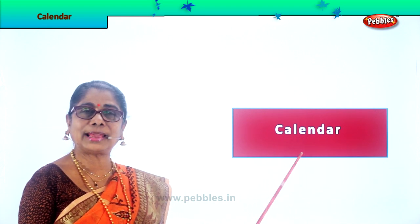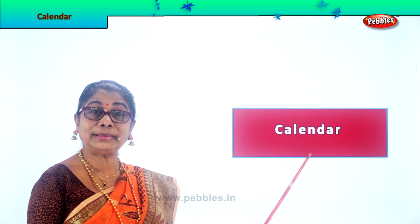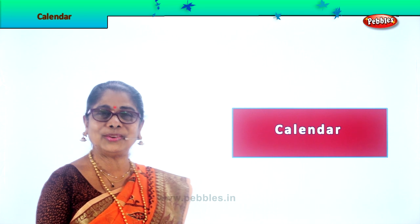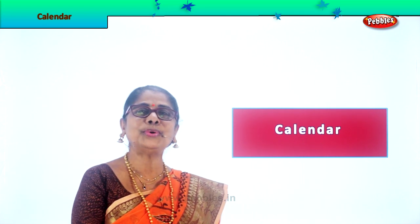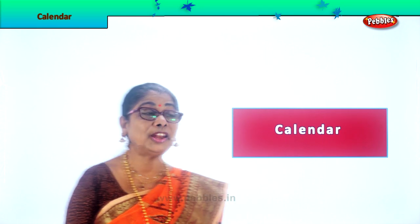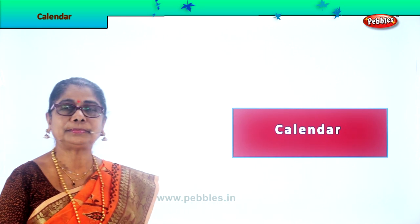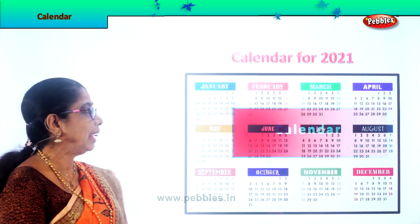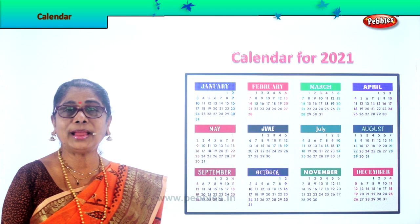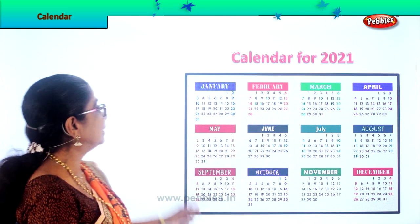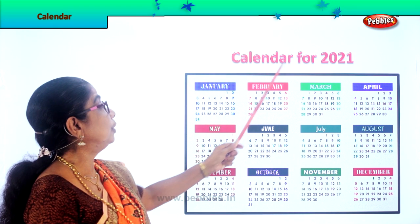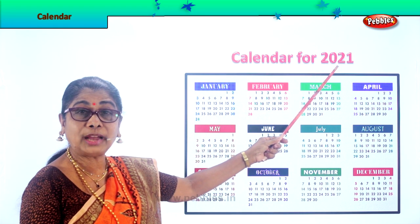And daddy must be looking at the calendar — oh, today is your birthday, and it's marked on the calendar. So let's look at the calendar today for you to know. It's the same thing that you have at home. Look at this — this is the full 12-month calendar. Now this calendar is for the year 2021.